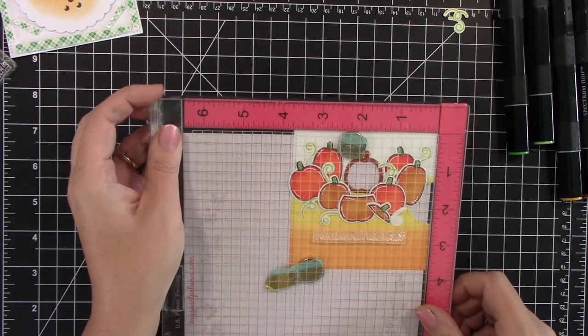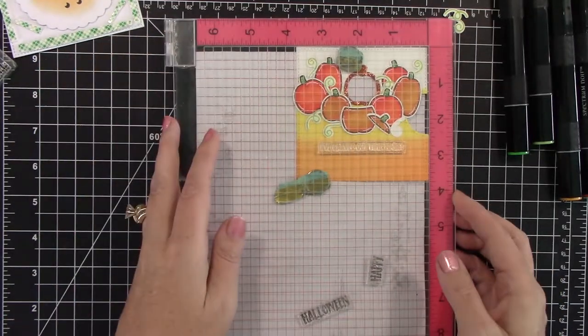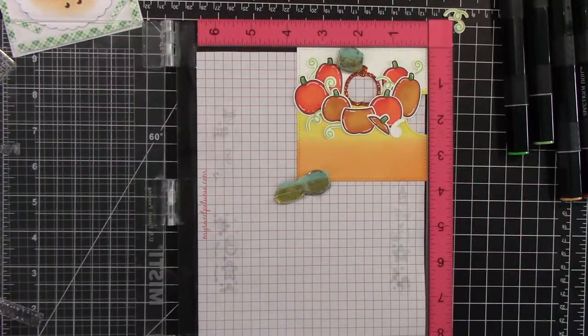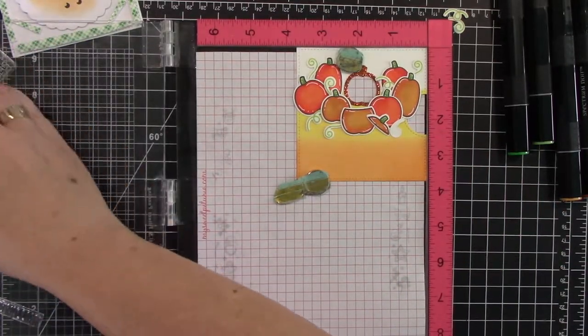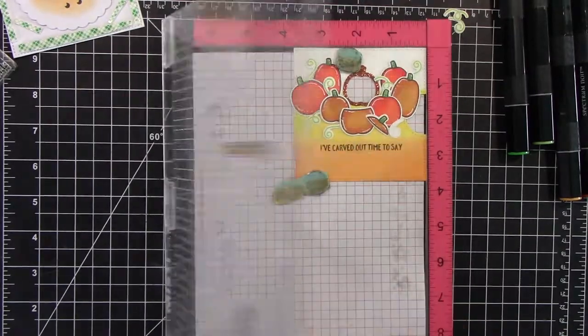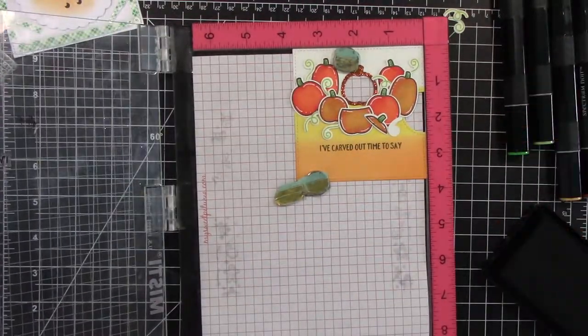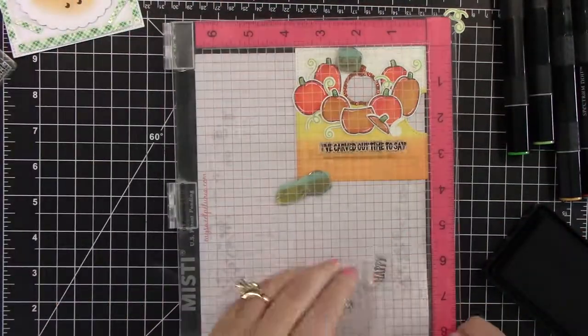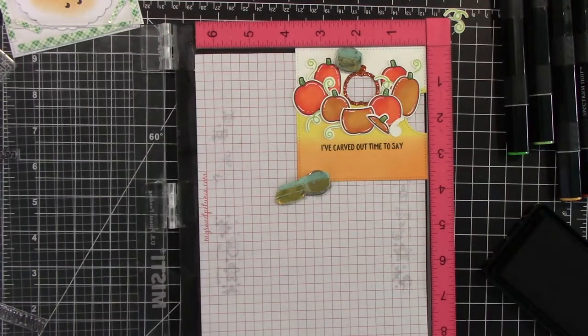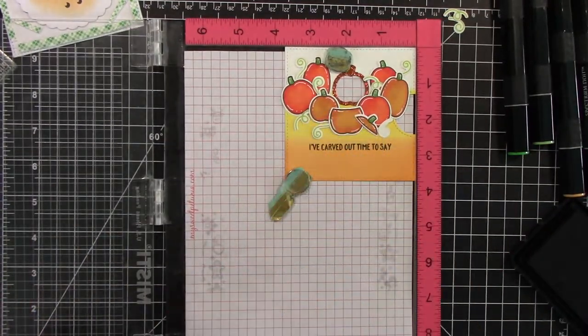So now I'm using the sentiments also from Pick of the Patch. And it's going to say, I've carved out time to say, Happy Halloween. So I just wanted to have that lined up in my Misti, of course, because I cannot stamp anything straight to save my life. It's not my talent. So I stamped that a couple times.